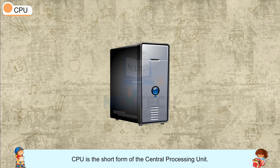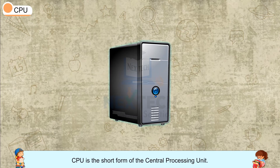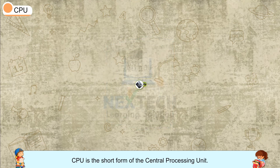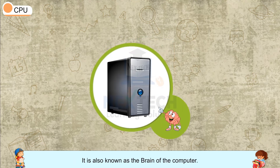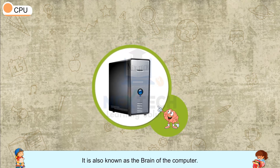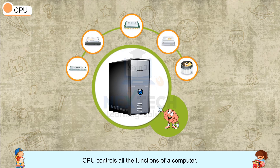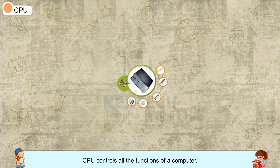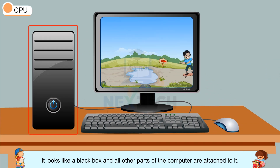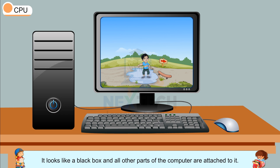CPU: CPU is the short form of Central Processing Unit. It is also known as the brain of the computer. CPU controls all the functions of a computer. It looks like a black box and all other parts of the computer are attached to it.